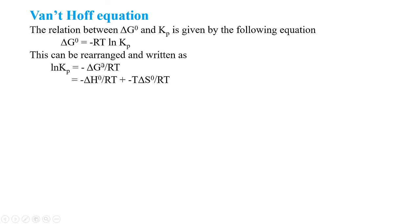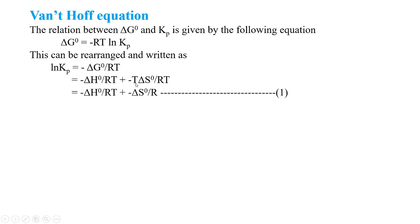You know that delta G naught is equal to delta H naught minus T delta S naught. By considering this equation, we can write: ln Kp equals minus delta H naught upon RT plus delta S naught upon R. Here T gets cancelled in the entropy term. This is equation number 1.